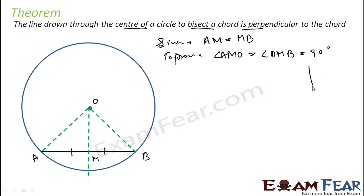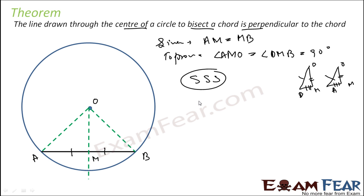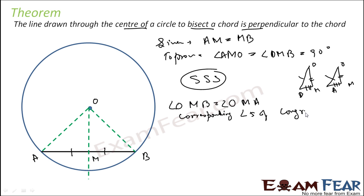We take the same two triangles by joining OB and OA. In these triangles: OA is equal to OB by radii, OM is equal to OM as a common side, and BM is equal to AM — already given. So by SSS rule the triangles are congruent. Since they are congruent, we can say angle OMB is equal to angle OMA by corresponding angles of congruent triangles.